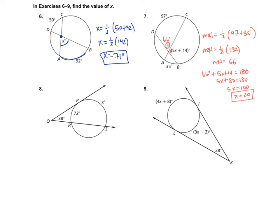For number 8, the point is outside, so we take big arc minus small arc. We get 38 equals one-half of X minus 72. Multiplying both sides by 2 gives 76 equals X minus 72. Adding 72 to each side, X equals 148 degrees.